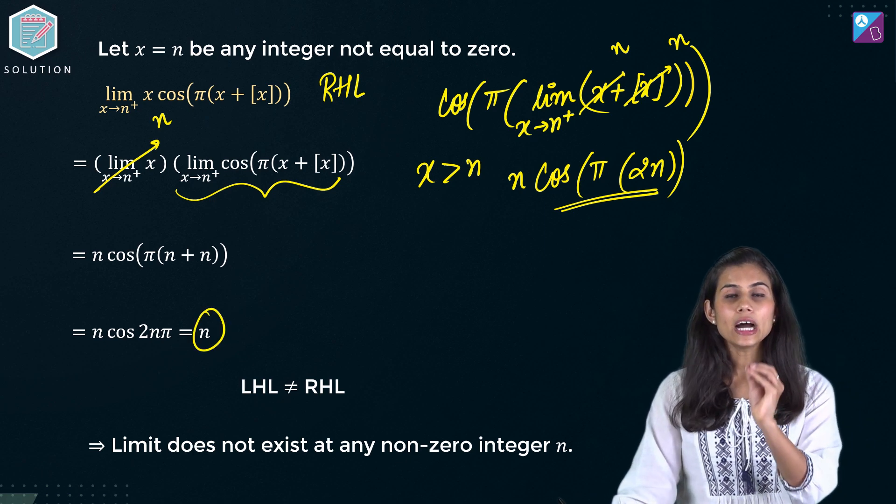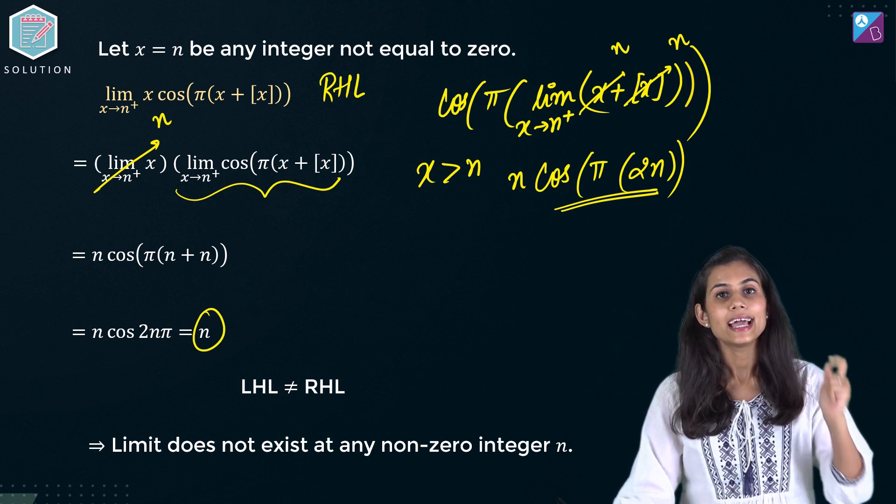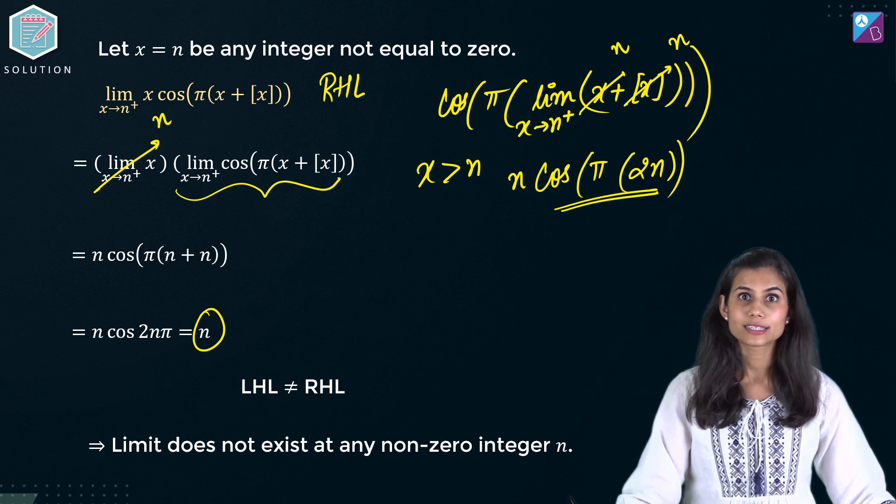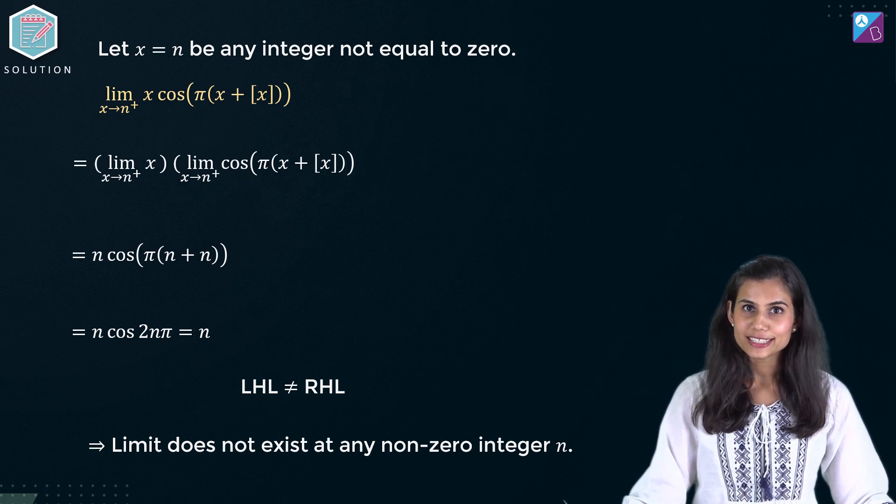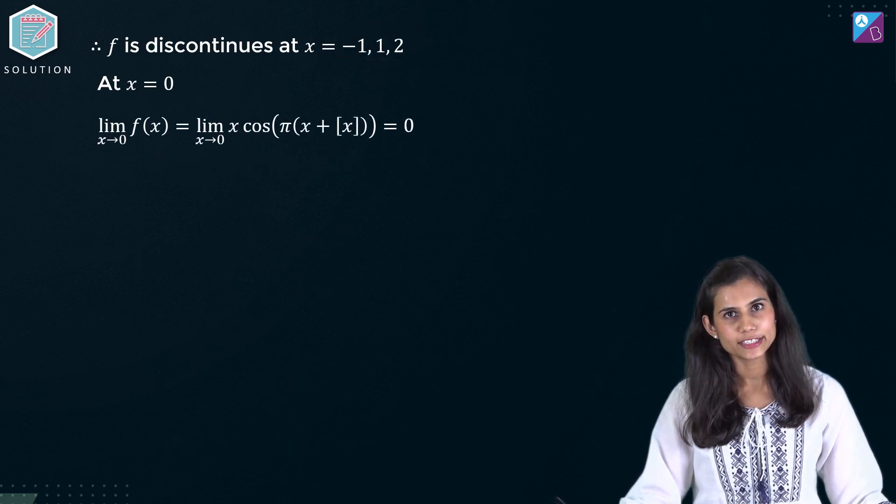That means for any arbitrary integer n, left hand limit is coming out to be minus n and right hand limit is coming out to be n. That means what? If you look at the options at 1, at minus 1, at 2, clearly this function is not continuous.